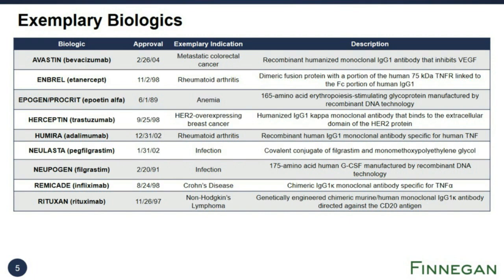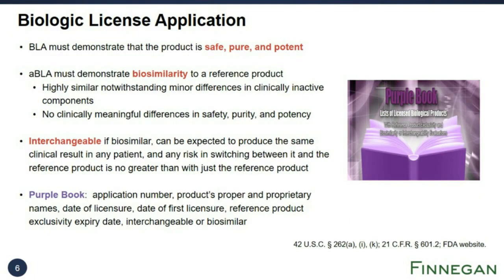To market a biologic, a company must file a Biologic License Application (BLA) with the Food and Drug Administration. The BLA must demonstrate that the product is safe, pure, and potent. A company may obtain approval for a biosimilar product by filing an abbreviated Biologic License Application (ABLA). By statute, biosimilar means: one, that the product is highly similar, notwithstanding minor differences in clinically inactive components; and two, that there are no clinically meaningful differences in terms of safety, purity, or potency.